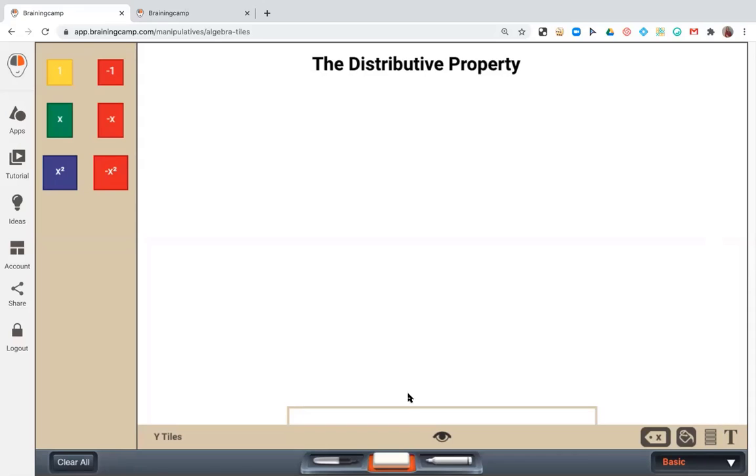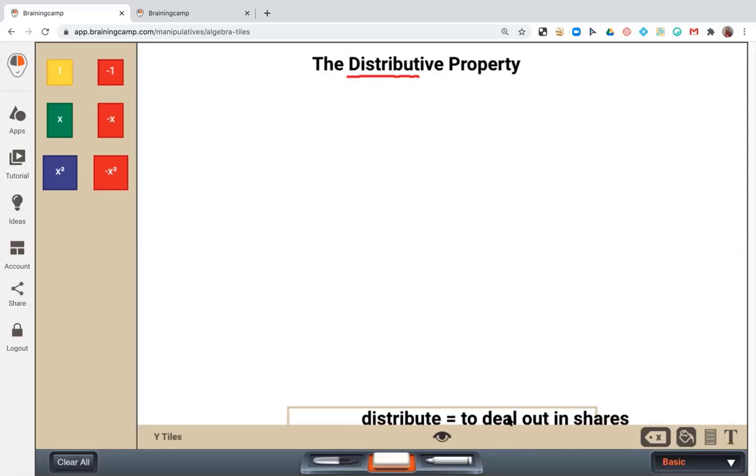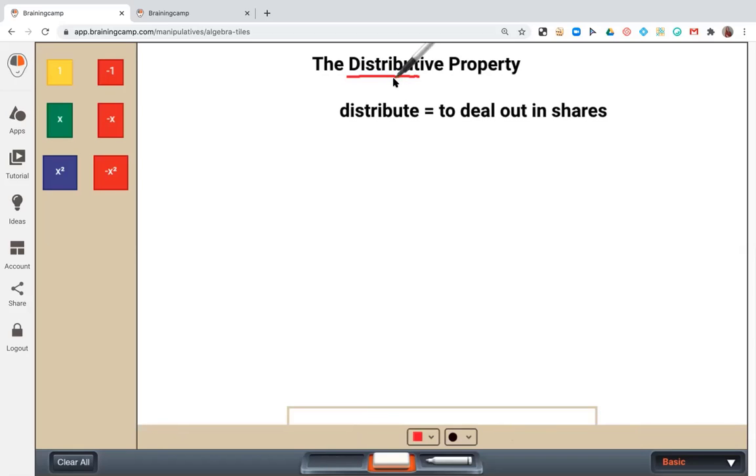So before we begin, here at Made for Math, we like to break down the meaning of words. And so if we look at the word the distributive property, distributive comes from the word distribute. And when we think about the word distribute, distribute means to deal out in shares.